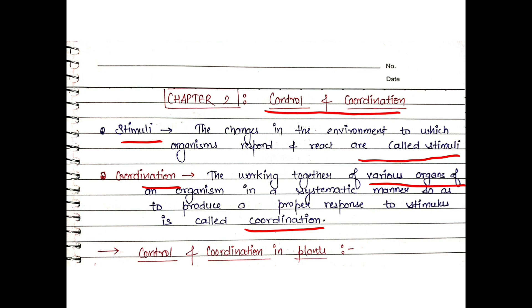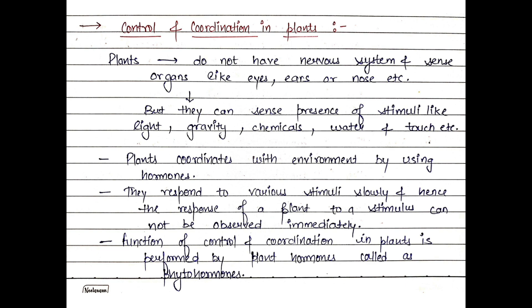First is control and coordination in plants. In plants, control and coordination happens with the help of hormones. Plants don't have a nervous system or sense organs like eyes, ears, and nose, but they have organs to sense stimuli like light, gravity, chemicals, water, and touch. According to these, plants give their response through hormones. The response is slow, so we don't see immediate response, but over a longer period, we can observe it. Function of control and coordination in plants is performed by plant hormones, called phytohormones.